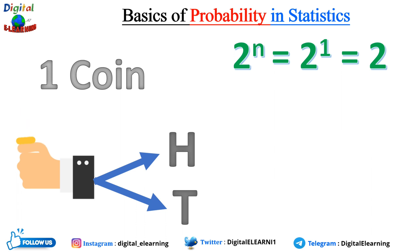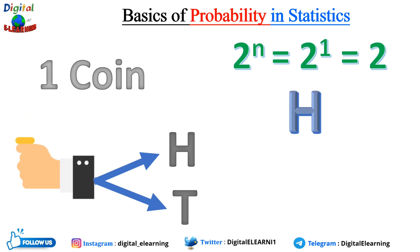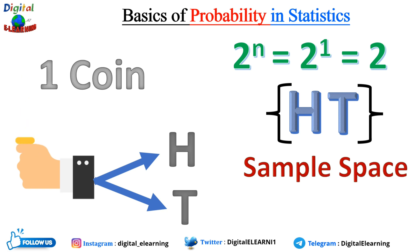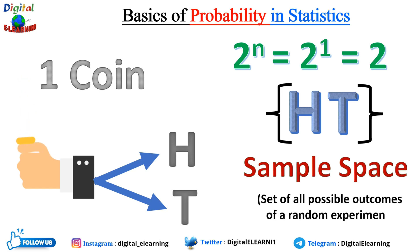We use the formula 2^n, where n denotes the number of coins. In this case we have one coin, so it comes to 2^1 = 2, which represents the two possible outcomes. This gives us our sample space. The sample space is nothing but the set of all possible outcomes of a random experiment.